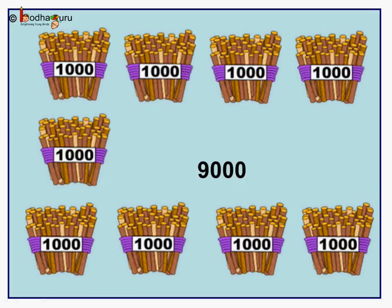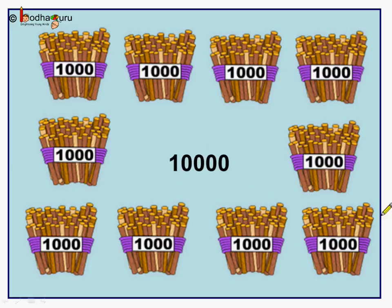Now, how many bundles of thousand is equal to nine thousand? Here, we have one, two, three, four, five, six, seven, eight, nine, ten — ten bundles of thousand and it is called ten thousand. Look, there are one, two, three, four — four zeros and one.